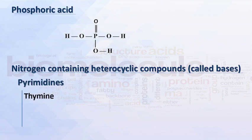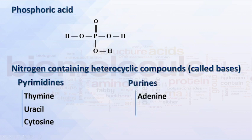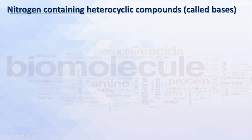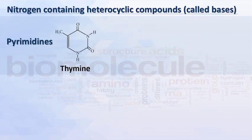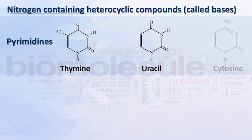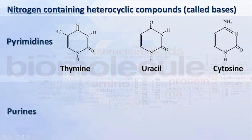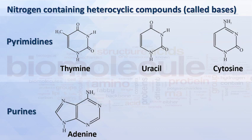Nitrogen-containing heterocyclic compounds called bases include the pyrimidines: thymine, uracil, and cytosine; and the purines: adenine and guanine. The structures of the pyrimidines thymine, uracil, and cytosine, and the structures of the purines adenine and guanine are shown.